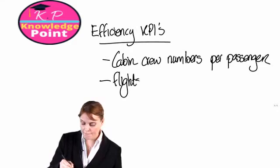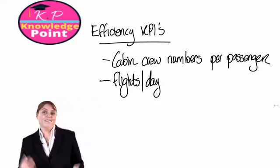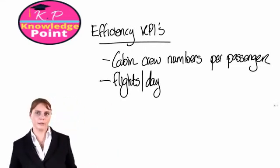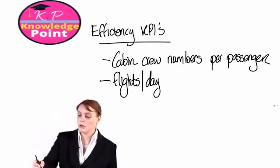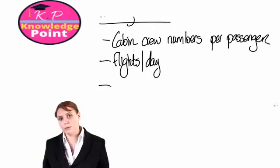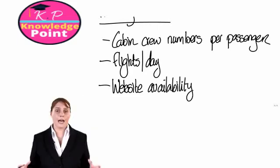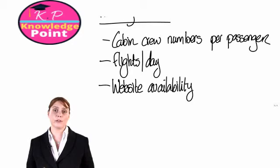We might also look at flights per day. In relation to cabin crew, if we're paying cabin crew for a day's work, are we keeping them busy? Are we getting that plane up and down as many times as possible in the course of the day? We mentioned that IT and online booking will be important to a budget airline, so a KPI for efficiency might be website availability. Given our IT expenditure, are we maximizing our output — does our website work well, and are we getting as many bookings through our website as possible? Is it available to customers 24 hours a day for every day of the year?